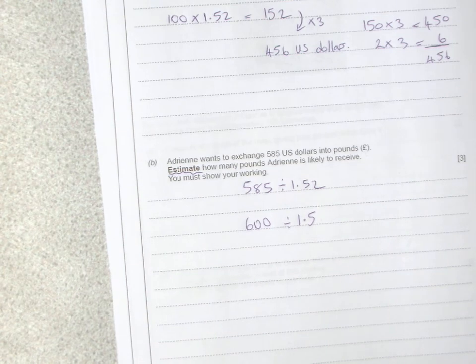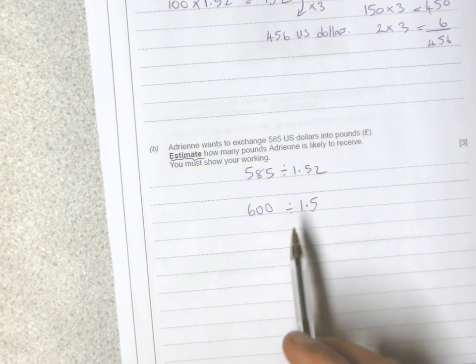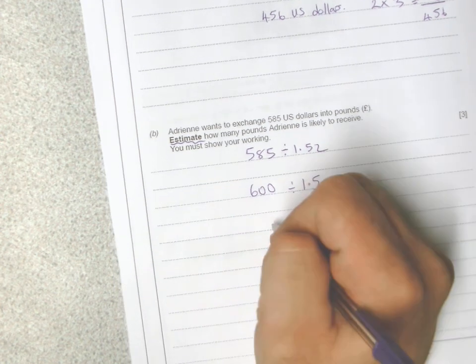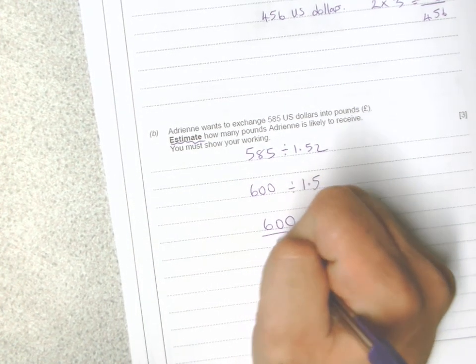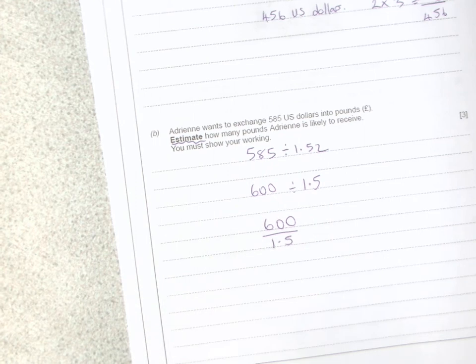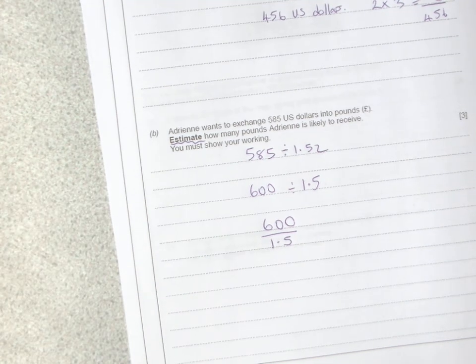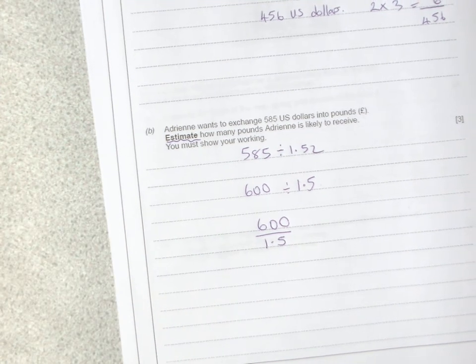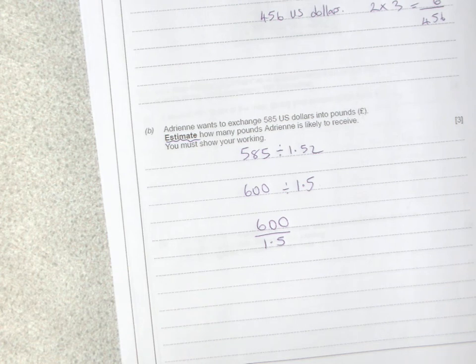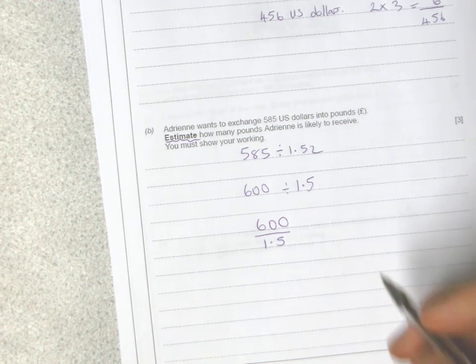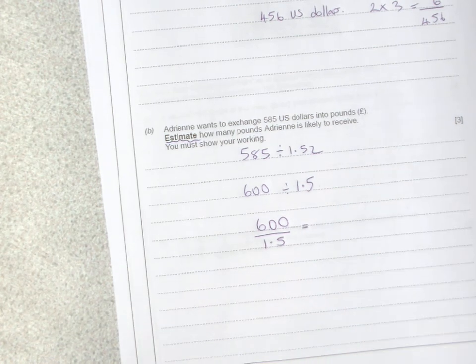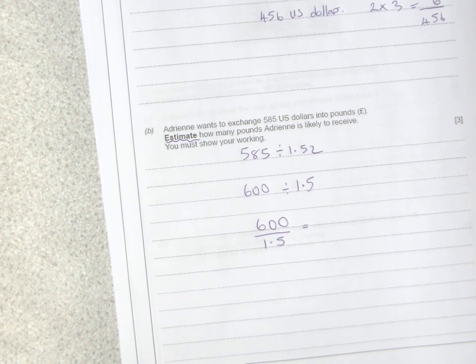To do this without a calculator, I would write it as a fraction: 600 divided by 1.5. When you have a fraction with a decimal involved, I would scale it up so that we don't have any decimals in the fraction.